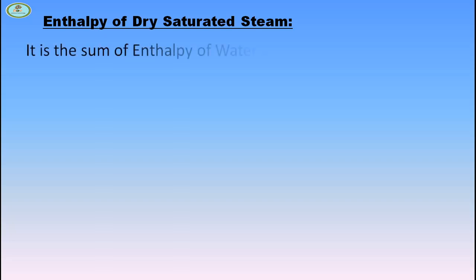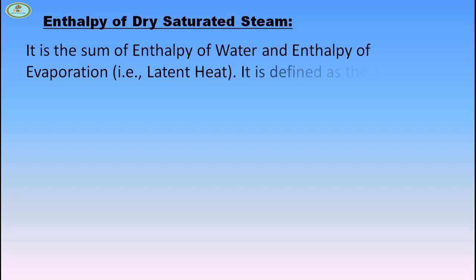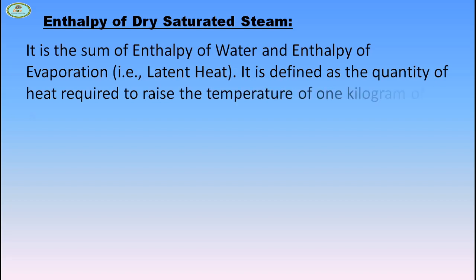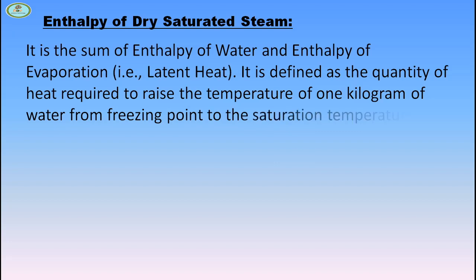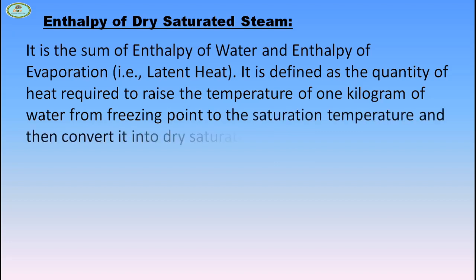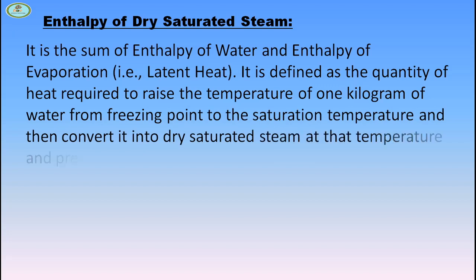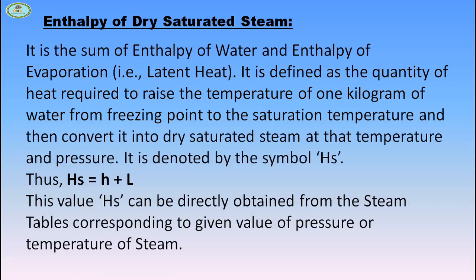Enthalpy of dry saturated steam is the sum of the enthalpy of water and the enthalpy of evaporation. It is defined as the quantity of heat required to raise the temperature of 1 kg of water from the freezing point to the saturation temperature and then convert it into dry saturated steam at that temperature and pressure. It is denoted by the symbol Hs. Thus, Hs = H + L. This value can be obtained directly from the steam table for a given pressure or temperature of steam.